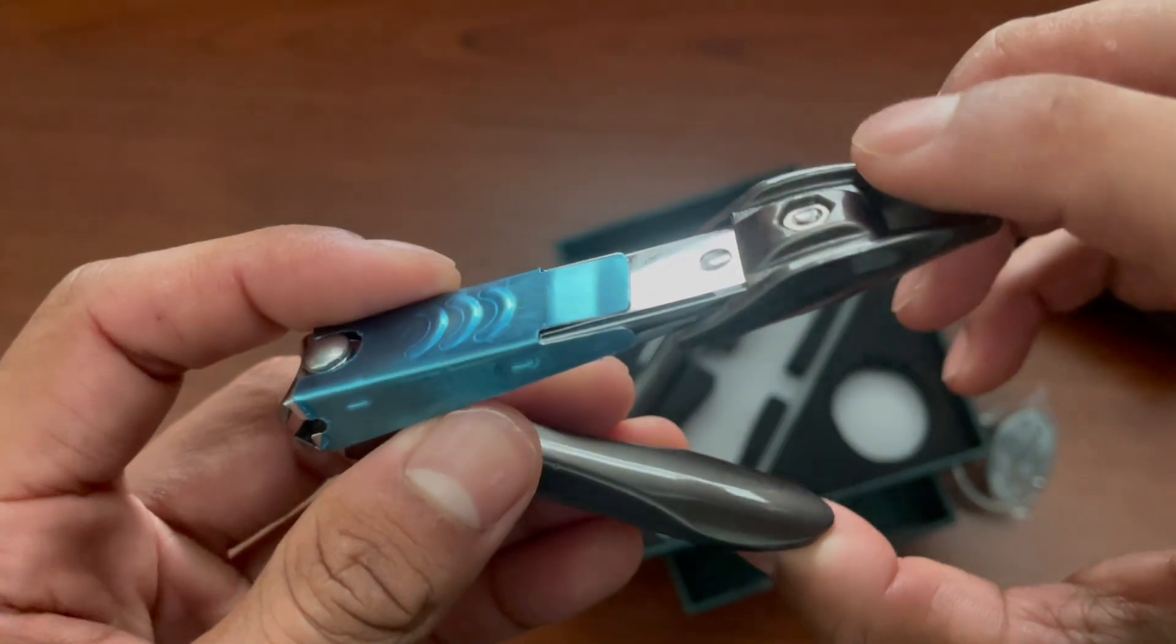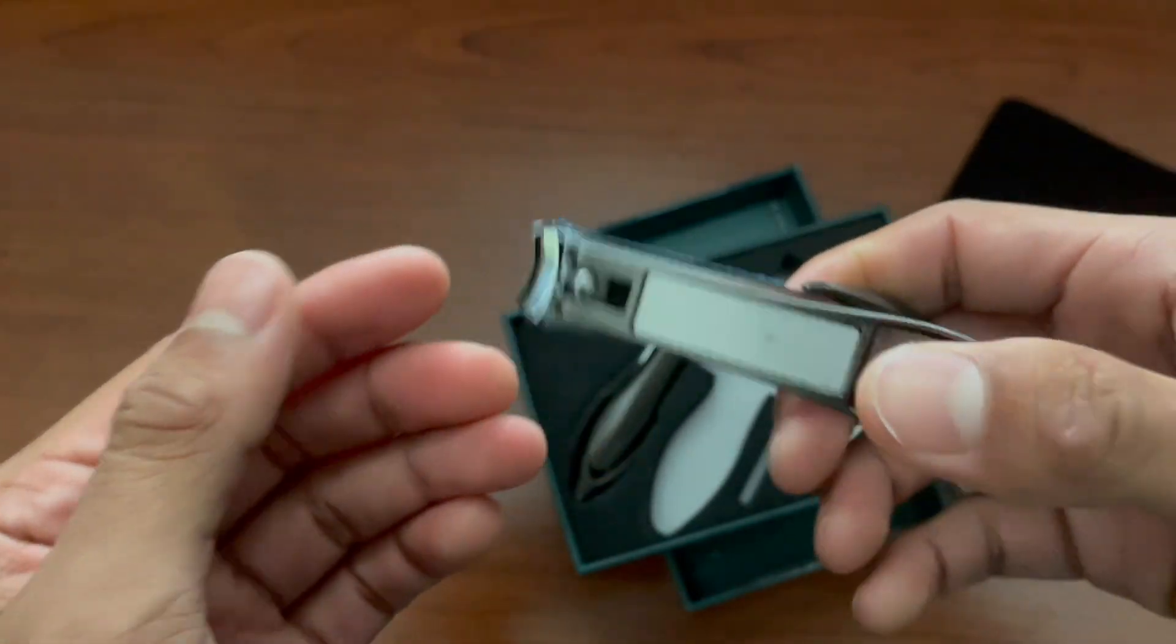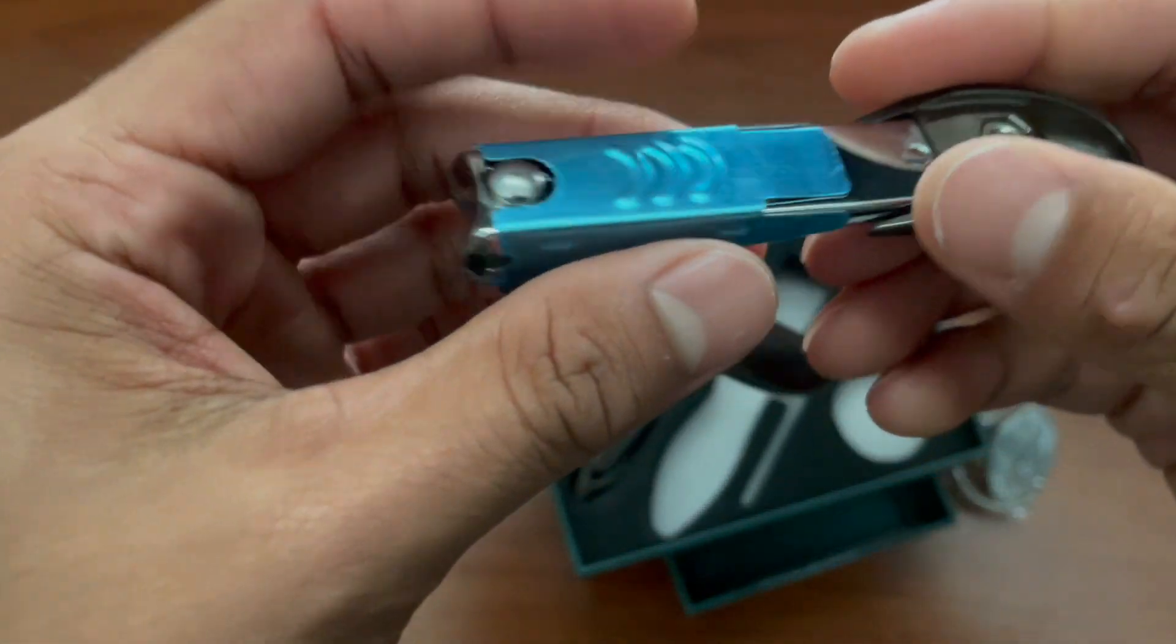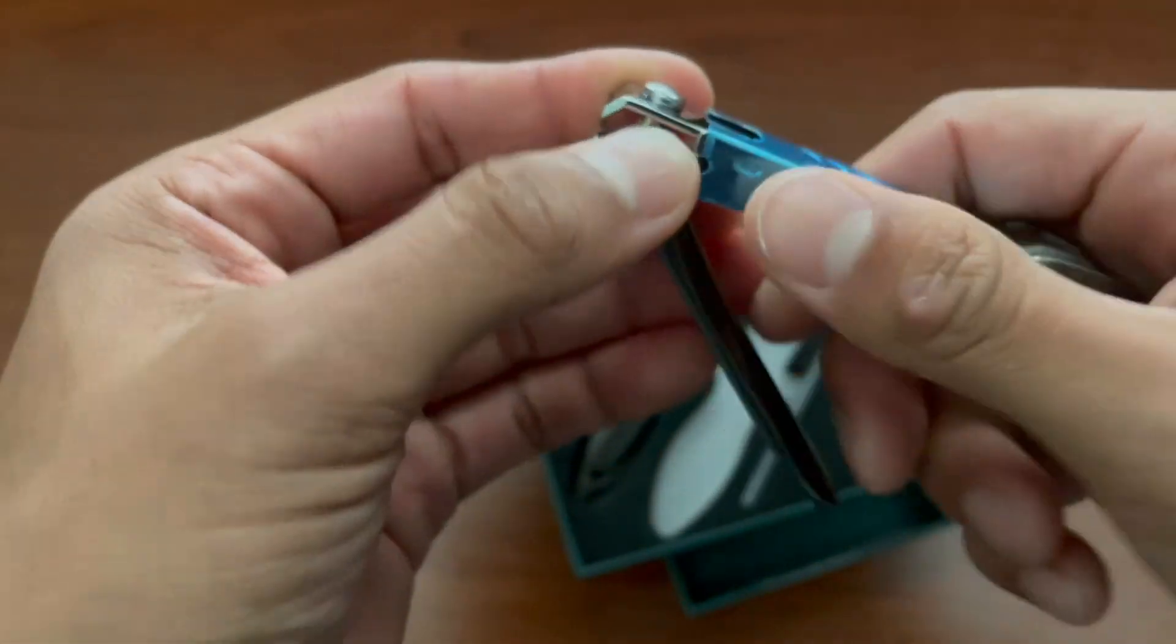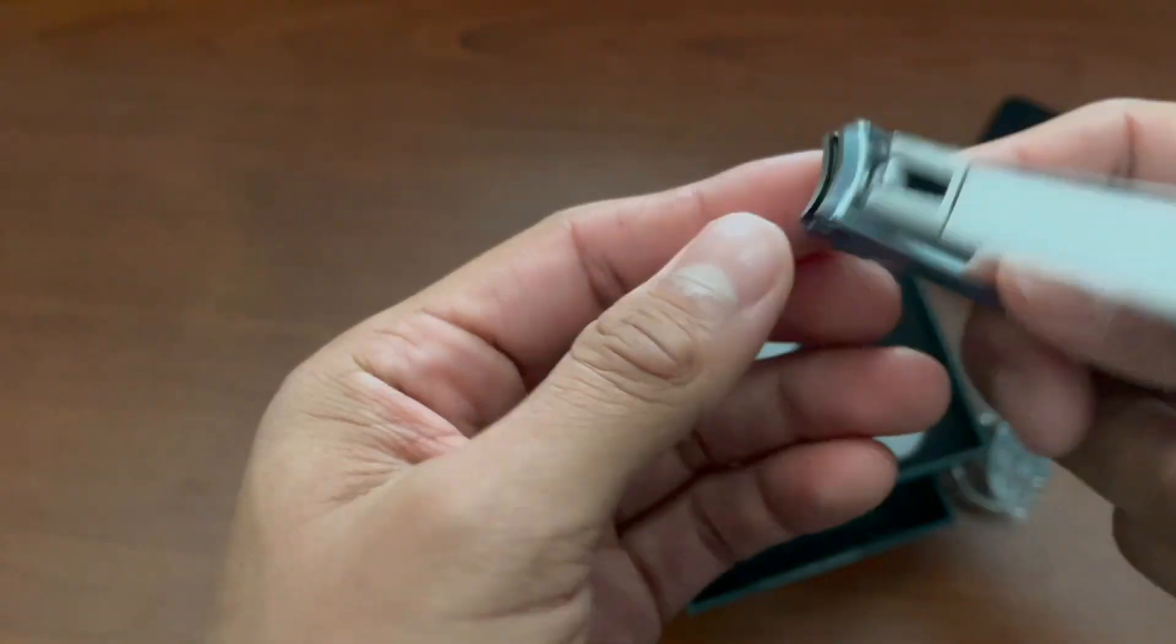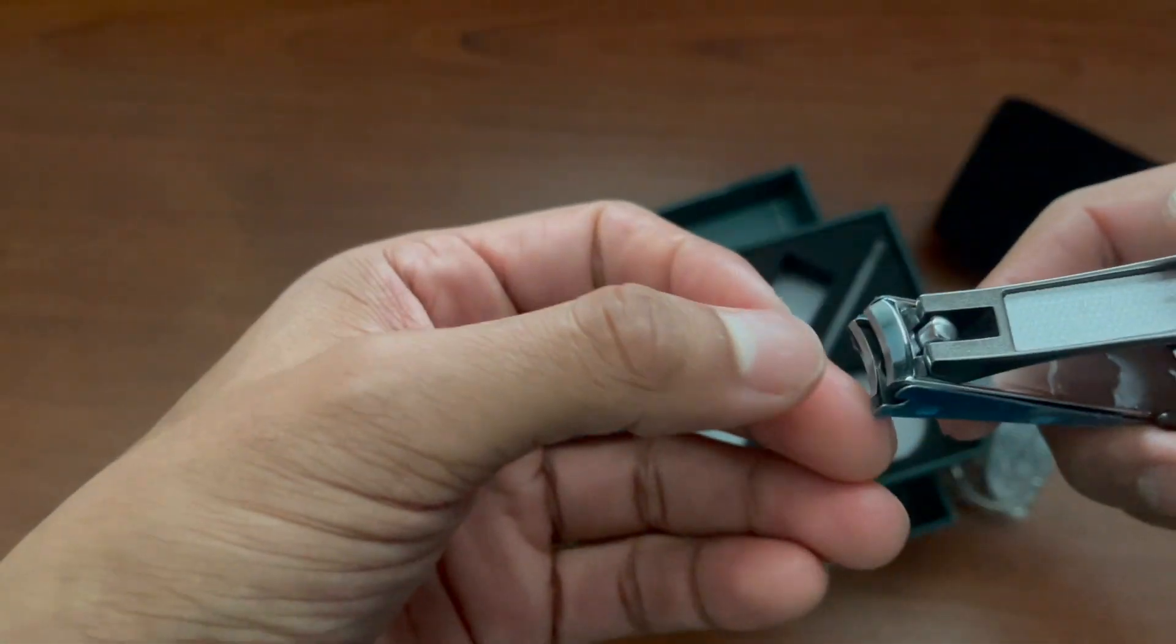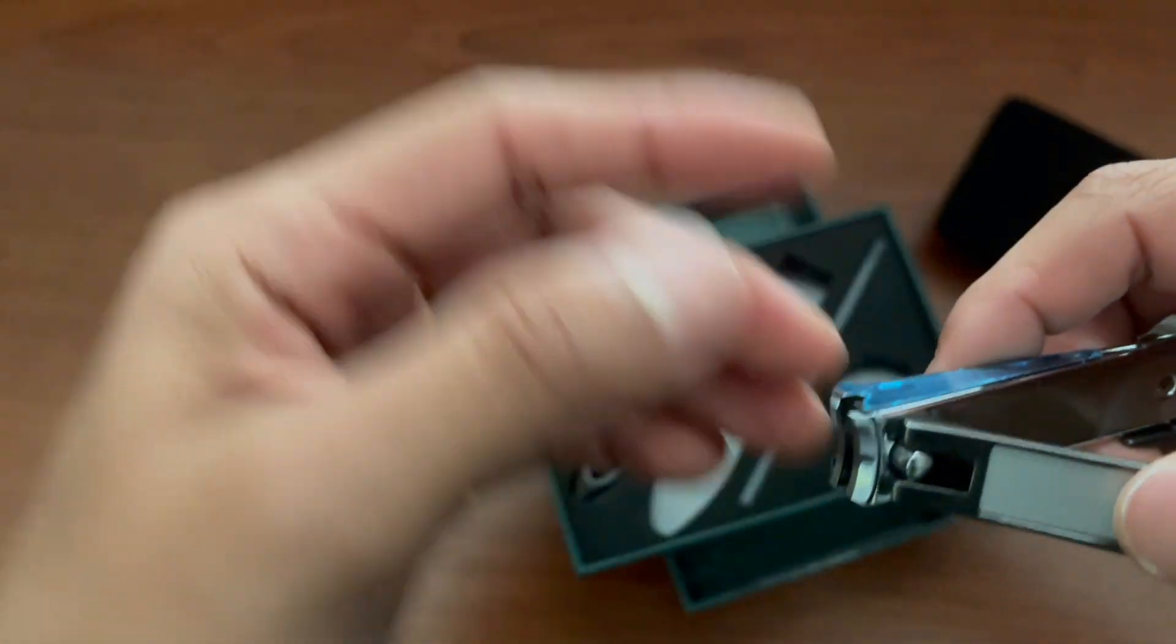Right here there are these two parts, and it also has this blue part. This will trap the nails from going everywhere because usually when you cut your nails, they bounce off from the side.